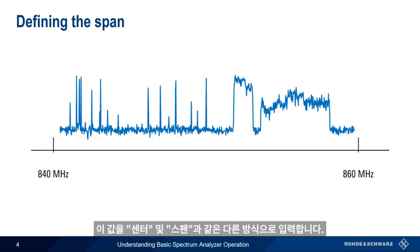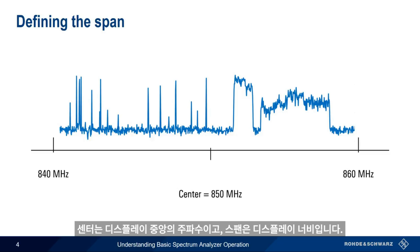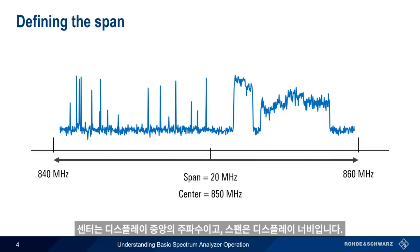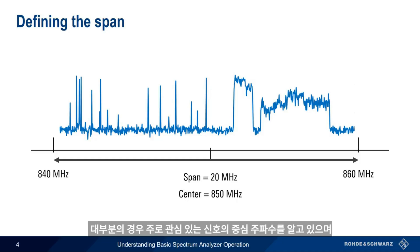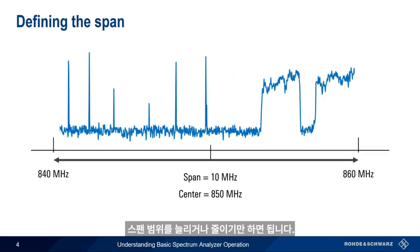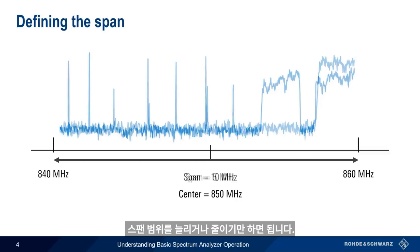The names are fairly self-explanatory. Center is the center frequency in the middle of the display, and span is the width of the display. The range 840 to 860 MHz is the same as a center of 850 MHz and a span of 20 MHz. Most often we know the center frequency of our signal of interest, and using span it's easier to zoom in and zoom out — just increase or decrease the span.